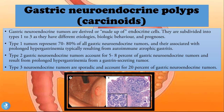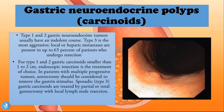In Zollinger-Ellison syndrome, patients suffer from a gastrin-secreting tumor which increases stomach acidity — a mechanism common in patients with type 2 gastric neuroendocrine polyps. Type 3 tumors are sporadic and account for about 20 percent of all gastric neuroendocrine tumors. Type 1 and type 2 tumors usually have an indolent course, whereas type 3 is the most aggressive, with local or hepatic metastasis present in up to 65 percent of patients who undergo resection.